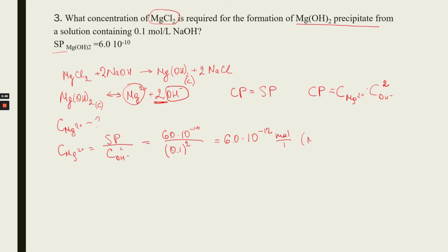The unit is moles per liter (or big M — it's the same unit). The concentration of magnesium chloride equals the concentration of magnesium, which is 6 × 10⁻¹² mol/L. This is the answer.